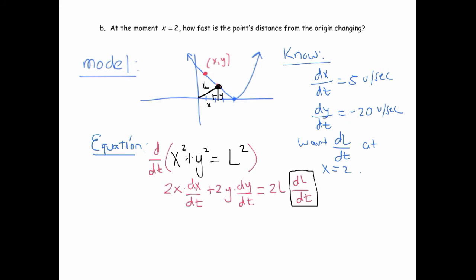So we'll substitute and solve. So, 2 times x, x is 2 at this instant. dx/dt we know is 5, plus 2. y, we don't know, but we'll find that in a second. dy/dt is negative 20 equals 2. L we also don't know at this instant, but we can find it in a second, times dL/dt, which is what we want.